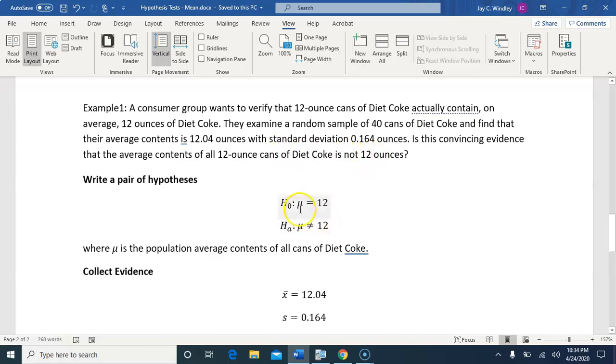So our hypotheses are written in terms of mu now, the population mean. The population mean is claimed to be 12, and we're trying to see if there's evidence that it's not equal to 12.